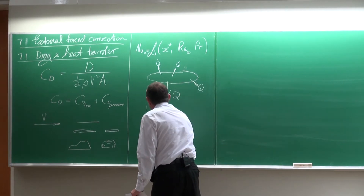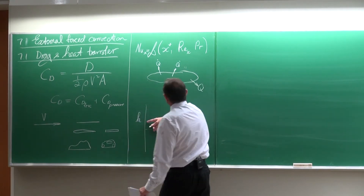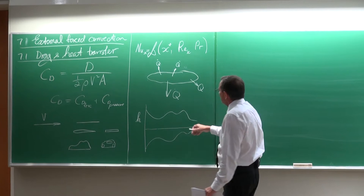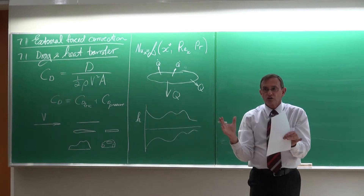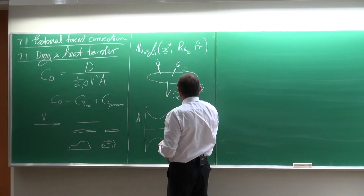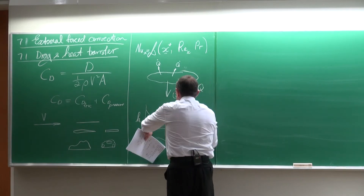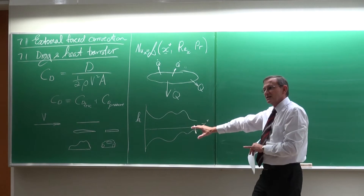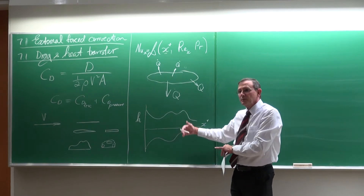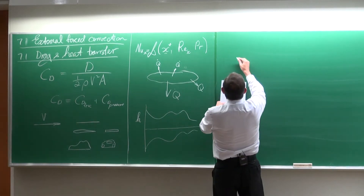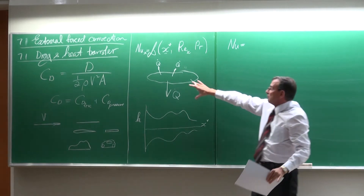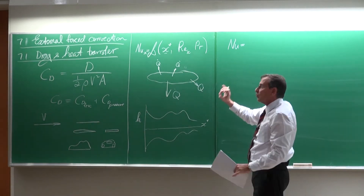If we plot the heat transfer coefficient, it would vary across the top and bottom of the body. In many cases, this local approach is not a good engineering solution. As engineers we are a little bit lazy — we would rather use the average Nusselt number for the whole body, not at a local specific point.